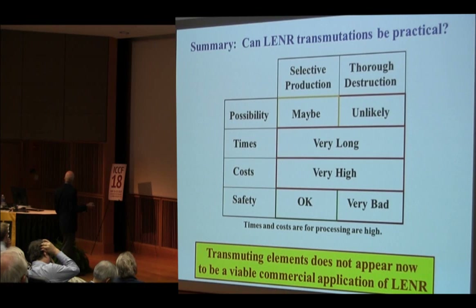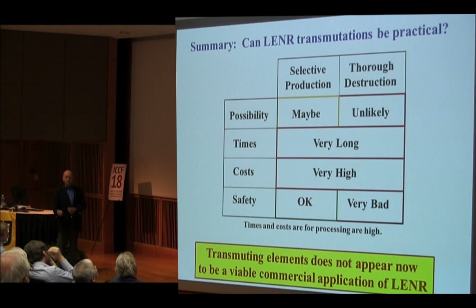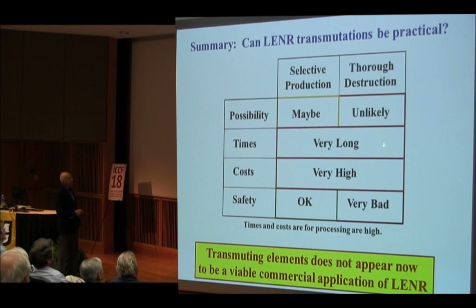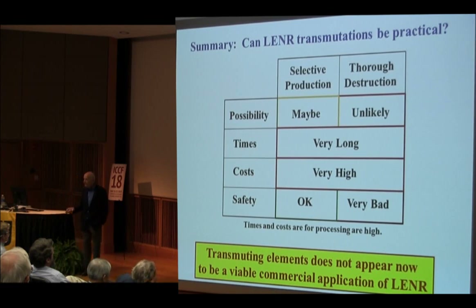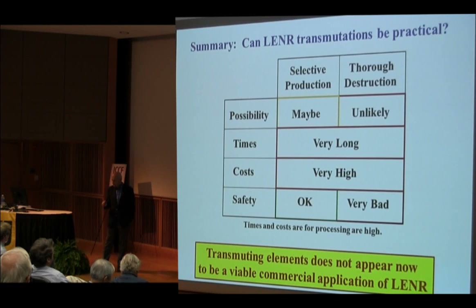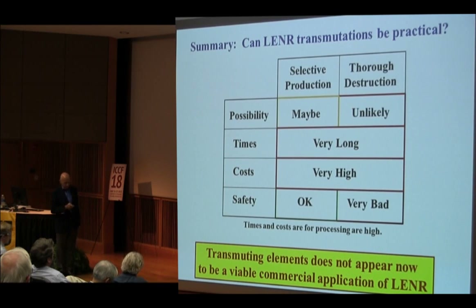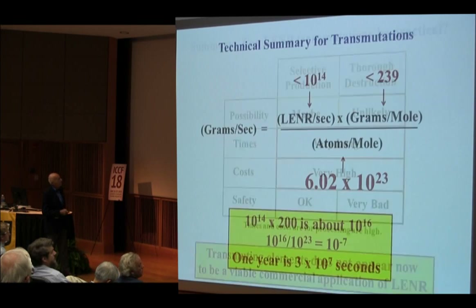Summary: Can LENR be practical for selective production of elements — like platinum but not something nearby — and for thorough destruction of all radioactive elements? Possibly? Maybe. Highly unlikely. Times are long, costs are high, safety is a concern. I don't see it as a viable commercial alternative in the near term. I know there are many people very interested in this, and I expect to get some arguments — I even hope to get some arguments.